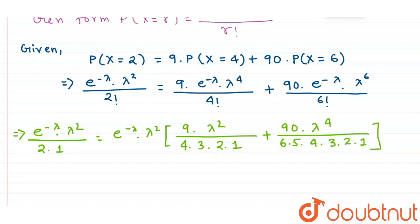From both sides, e^(−λ) cancels out and λ² cancels out. Then 9 and 3 cancel, and 6 cancels as well. So we are left with 1/2 on the left side, and terms involving 3 on the right side.